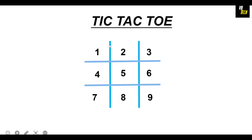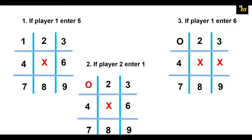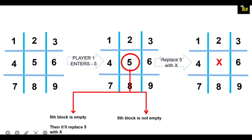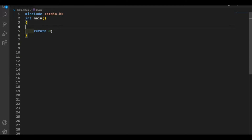This is our tic-tac-toe board. First we're going to make the board and then we're going to initialize each box with numbers 1 to 9. We will replace these numbers with X or O based on what the user enters. If player 1 enters 5, the compiler checks if the fifth block is empty — no symbol, neither X nor O. If empty, it replaces 5 with X; if not empty, it asks the user to enter their choice again.